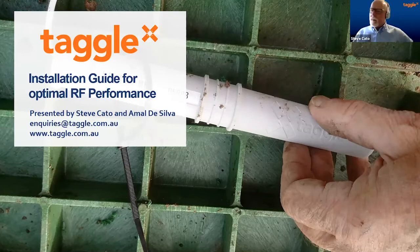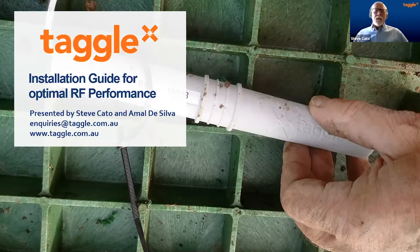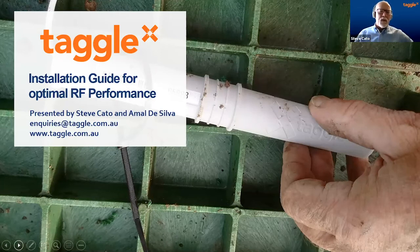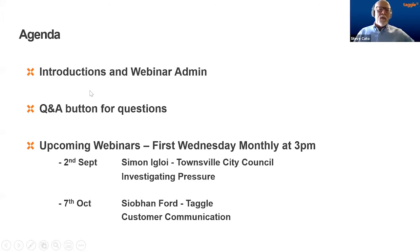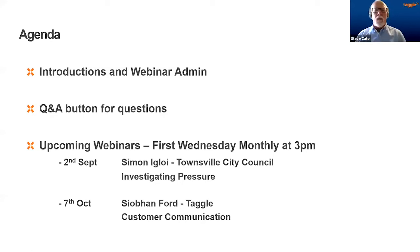The topic of today's talk is installation guide for optimal RF performance. The idea is that we're just going to go through some of the things that we've learned to do well through the experience that Tagle have had over the years, the last 10 years installing systems. There's a Q&A button for questions. If we don't get to questions we will capture them and respond afterwards in writing, and the session is being recorded.